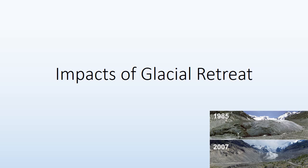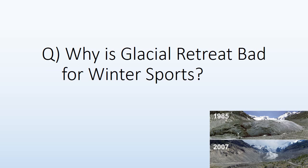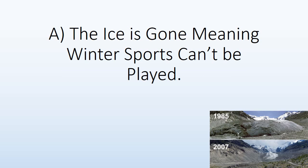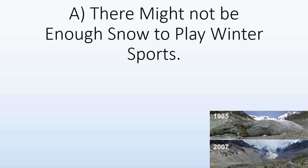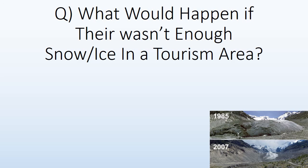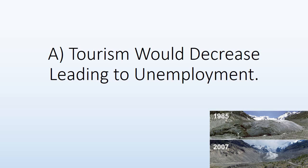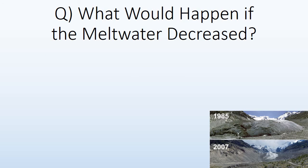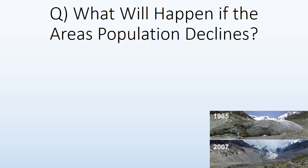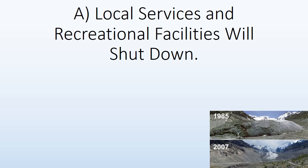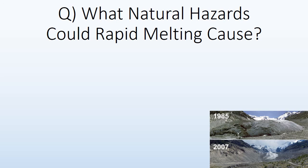Impacts of glacial retreat. Glacial retreat is bad for winter sports because the ice is gone and there may not be enough snow to play winter sports. If there isn't enough snow or ice in a tourism area, tourism would decrease leading to unemployment. If meltwater decreases, industries that rely on it, such as hydroelectric power, will lose money and shut down. If the local population declines, local services and recreational facilities will shut down. Rapid melting could also cause flooding.